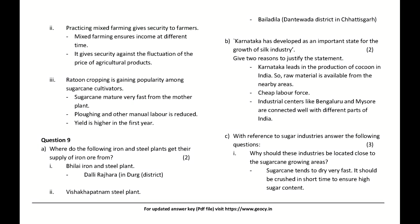Karnataka has developed as an important state for the growth of the silk industry. Give two reasons: Karnataka leads in the production of cocoons in India, so raw material is available from nearby areas; cheap labor force; and industrial centres like Bengaluru and Mysore are well connected with different parts of India.